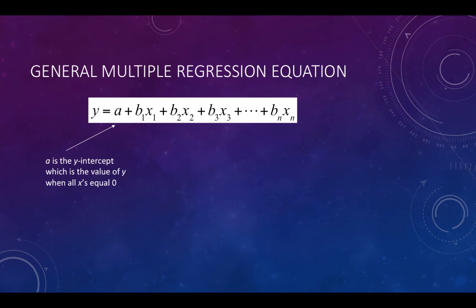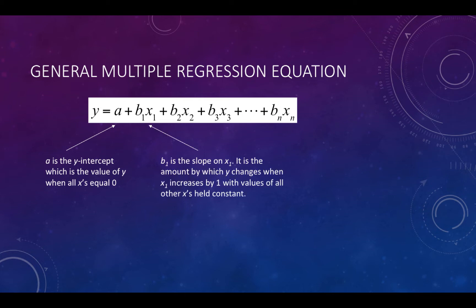Considering the b's, b1 is the slope on x1. It is the amount by which y changes when x1 increases by one with values of all other x's held constant. So b1 is simply the slope on x1, and what we do with x2 through xn is hold them constant.